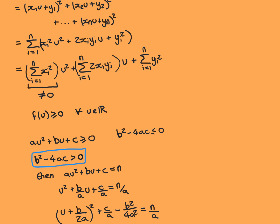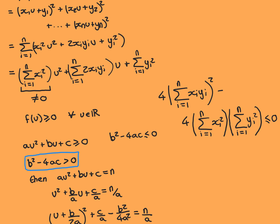Let's now apply this fact to our quadratic function. We identify our a, b, and c and substitute into b² − 4ac ≤ 0. Taking b and squaring it: pull the 2 out, squaring gives 4, and the rest squared is (Σᵢ xᵢyᵢ)². Then subtract 4 times a, which is Σᵢ xᵢ², times c, which is Σᵢ yᵢ². So 4(Σxᵢyᵢ)² − 4(Σxᵢ²)(Σyᵢ²) ≤ 0.